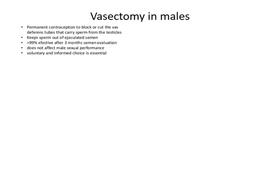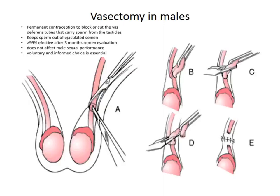Vasectomy in males is permanent contraception to block or cut the vas deferens, which carry sperm from the testicles to the exterior, keeping sperm out of the semen. It is 99% effective, and after three months of semen evaluation the procedure is confirmed. It does not affect male sexual performance and requires voluntary informed consent. The procedure involves cutting the skin, exposing the vas deferens, and then either cutting and sealing it, blocking it, or cauterizing it.